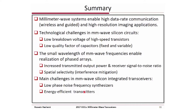In summary, millimeter wave systems enable high-resolution imaging and high data-rate communication applications, whether wireless or guided. There are several technological challenges in realizing millimeter wave silicon circuits, including the low breakdown voltage of transistors and the low quality factor of passive components, specifically capacitors. The smaller wavelength of millimeter wave frequencies enables compact phased arrays that increase transmitter output power and receiver signal-to-noise ratio, and offer spatial selectivity for interference mitigation. Existing research challenges include realization of low phase noise compact frequency synthesizers and energy-efficient transmitters. Thank you very much.